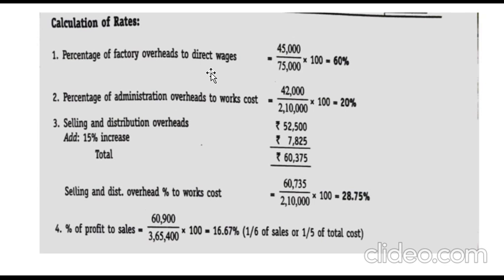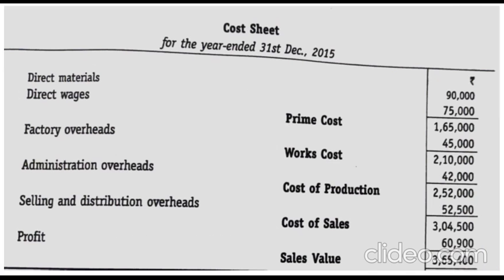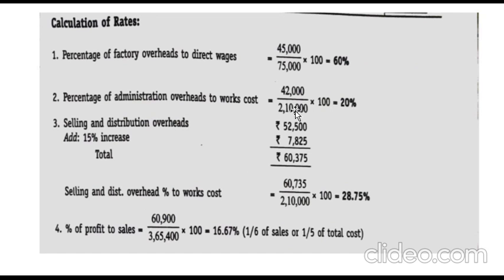Next, administration overhead: the previous year's figure is 42,000 and works cost is 2,10,000. The formula is administration overhead divided by works cost into 100: 42,000 divided by 2,10,000 into 100 equals 20 percent.